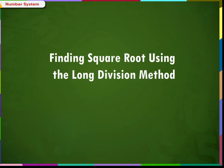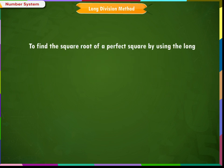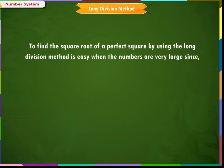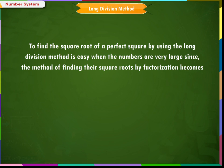Finding square root using the long division method. To find the square root of a perfect square using the long division method is easy when the numbers are very large, since the method of finding square roots by factorization becomes lengthy and difficult. Let us understand the method with an example.